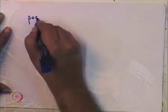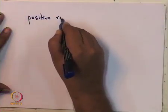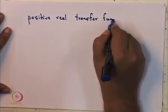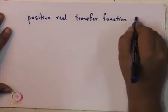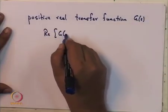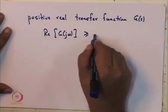Let us look at some examples of transfer functions which are positive real. Those transfer functions whose Nyquist plots lie in the first and the fourth quadrant — one definition for that is positive real. A positive real transfer function G is such that the real part of G is greater than or equal to 0.